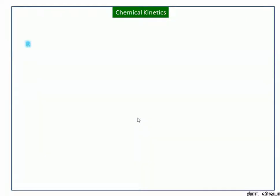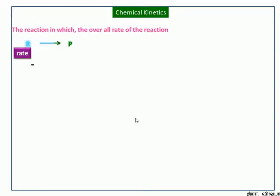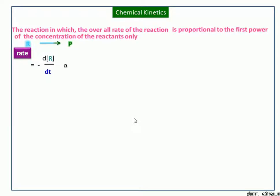In this video, we discuss first-order kinetics. Let us consider this chemical reaction where R is the reactant, and this reactant gives a product. We define first-order kinetics as the reaction in which the overall rate of the reaction can be expressed mathematically as: minus d[R]/dt is proportional to the first power of the concentration of the reactants only. This type of reaction is known as a first-order reaction.